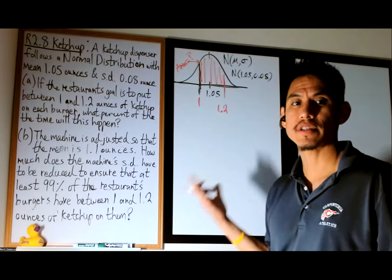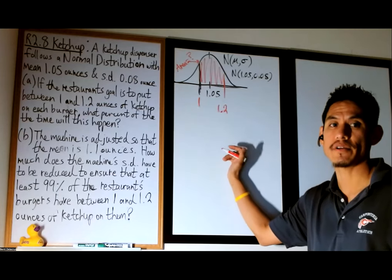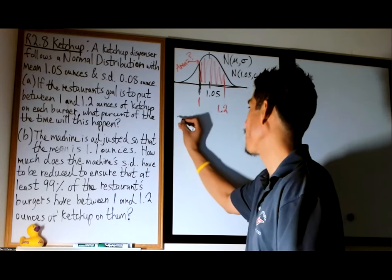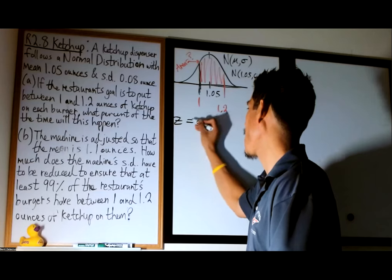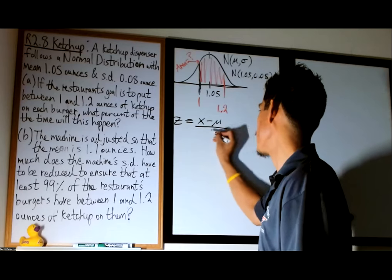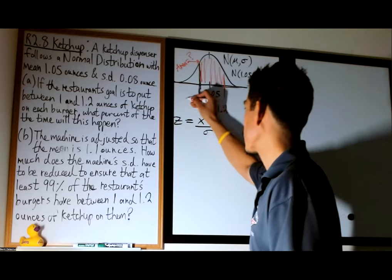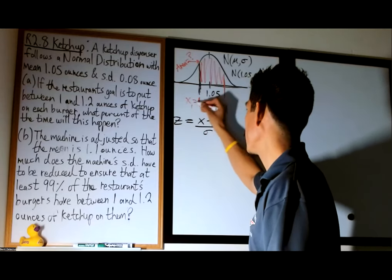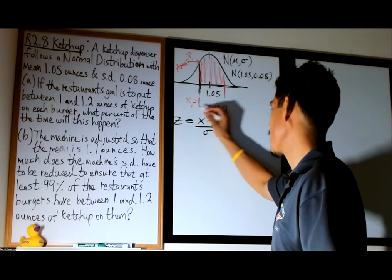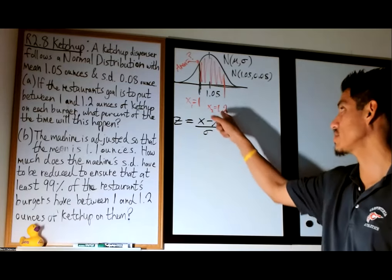What we're going to do is change these values into standardized values — z-scores, in other words. Our z-score equals the original observation value x minus the mean, over the standard deviation. In this case we have two x values: x1 is 1, and x2 is 1.2. So we have essentially two z values we've got to find.